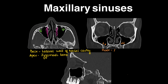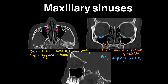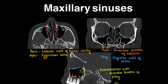The floor of the maxillary sinus is formed by the alveolar processes of the maxillary bone, and the roof of the maxillary sinus is formed by the inferior wall of the orbit — or the floor of the orbit. The posterior lateral wall of the maxillary sinus is the anterior border of the pterygopalatine fossa.